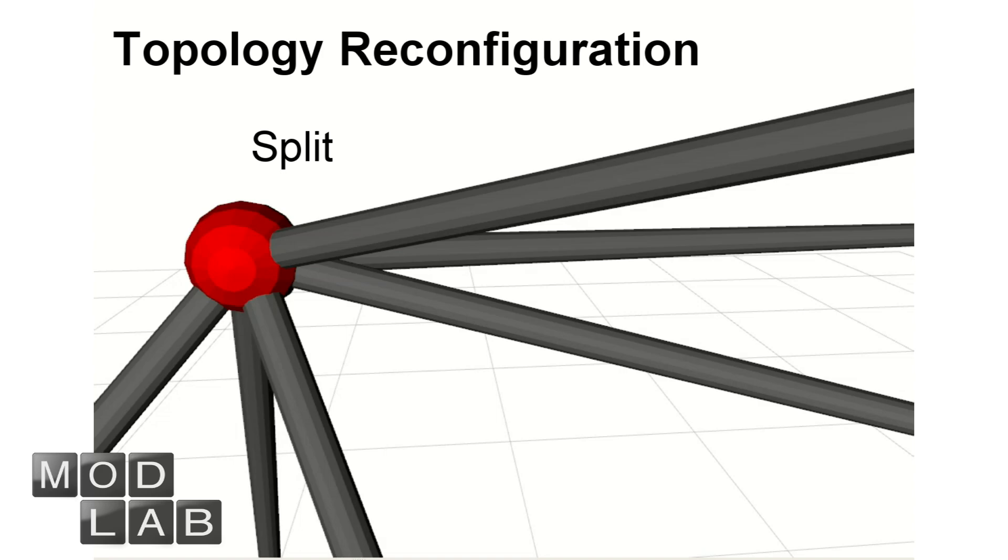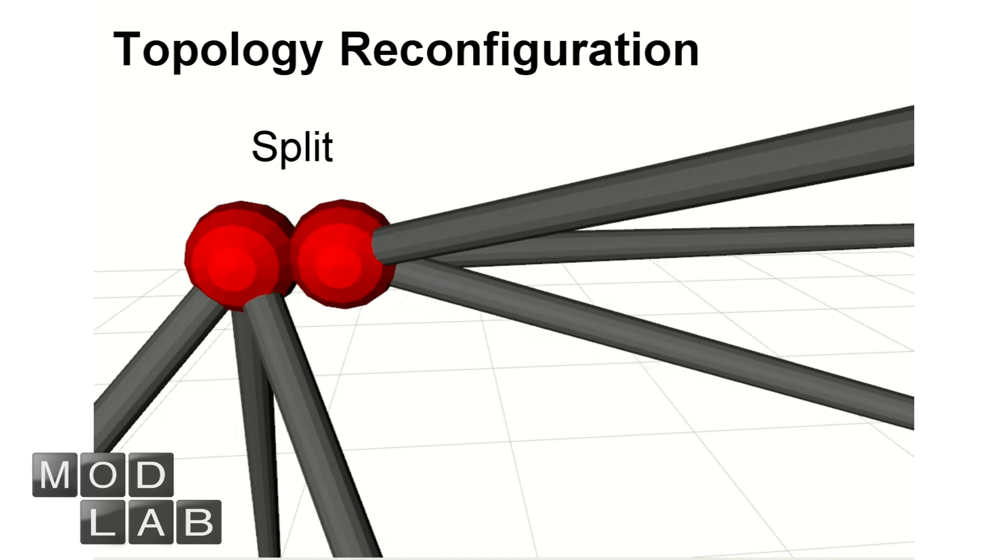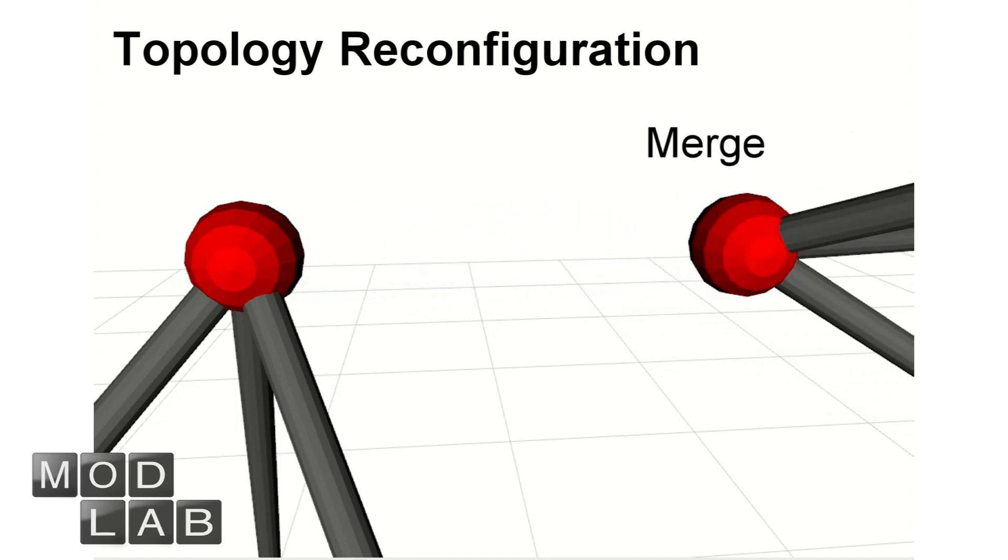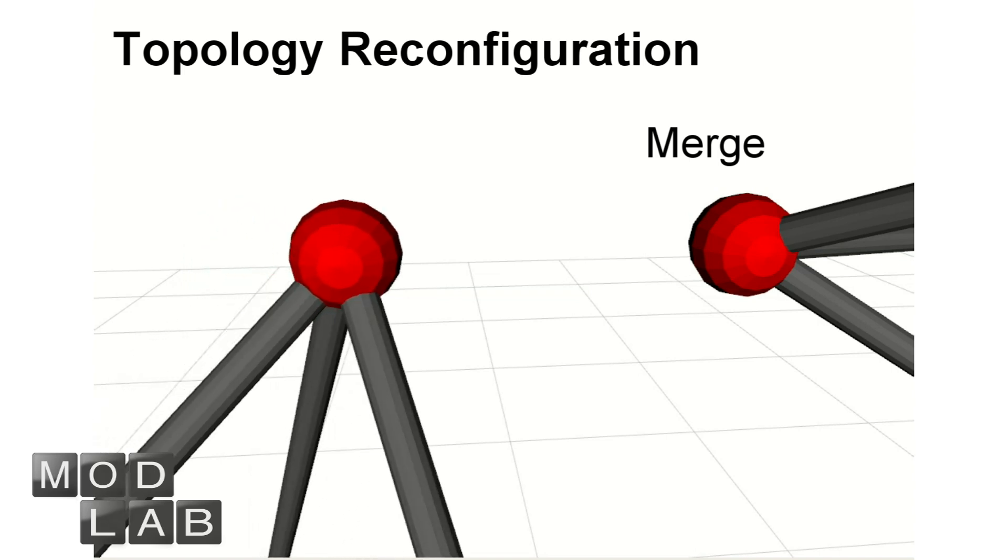In a reconfiguration process, a single node with a sufficient amount of members can un-dock into a pair of nodes, and two separate nodes in the truss can dock to form one node which connects all of the involved members.